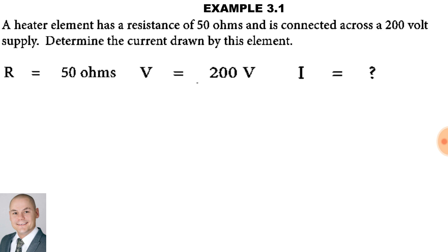Here we have a calculation. A heater element has a resistance of 50 ohms and is connected across a 200 volt supply. Determine the current drawn by this element. So the unknown factor in this calculation is current. We're going to use Ohm's law to work out the answer.